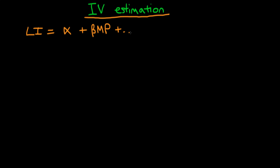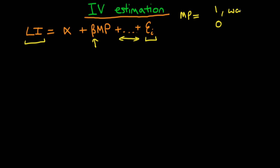The idea is that military participation might lower lifetime earnings because of the psychological effects of going to war. Our model has lifetime earnings on the left-hand side, dependent on military participation plus a range of other variables we can control for — things like education or parental income — and a range of unobserved factors contained within the error term. Beta here should be less than zero because military participation acts to decrease lifetime earnings. Military participation is a dummy variable: it takes a value of one if an individual went to war, and zero otherwise.